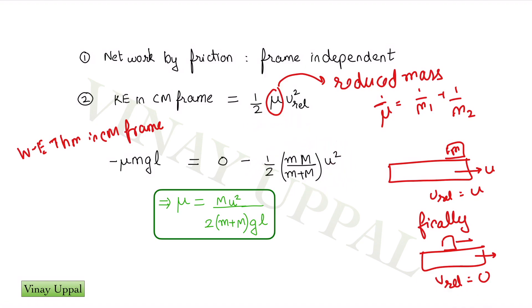U_relative is u. And the reduced mass is given by small m into capital M by small m plus capital M. This is the basic formula for reduced mass coming from this equation.